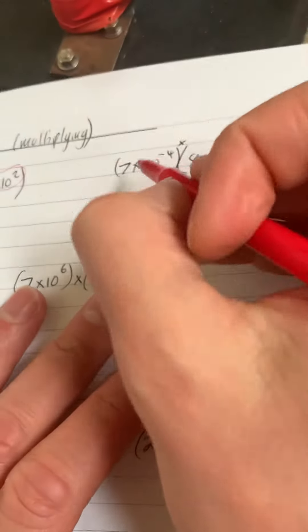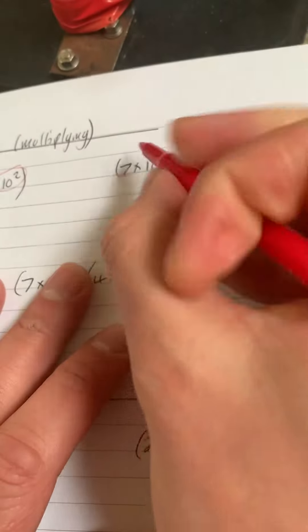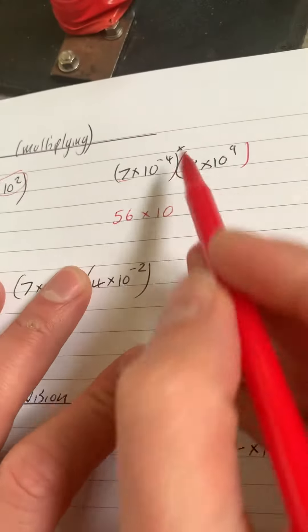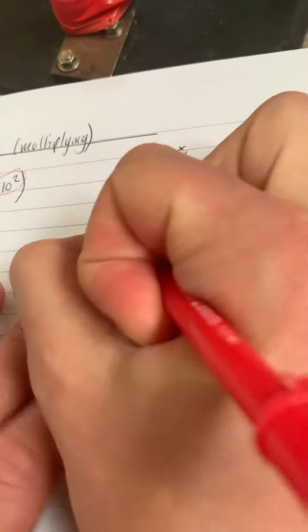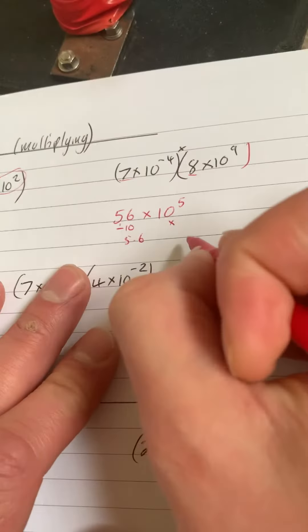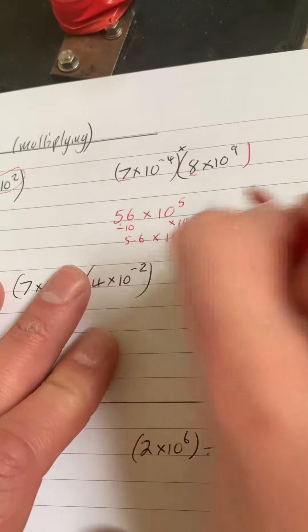This one here, I've written it a bit wrong, but there's a little times in between here, so 7 times 8 is 56 times 10. Now we've got minus 4 add 9, which gives us 5. I'd have to divide this by 10 to get 5.6. I have to times this side by 10, so I've got 5.6 times 10 to the power of 6.